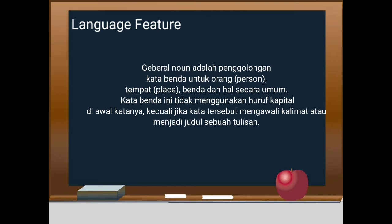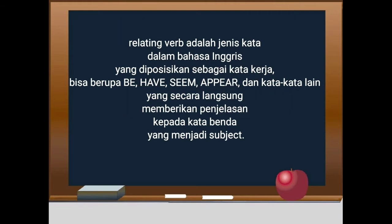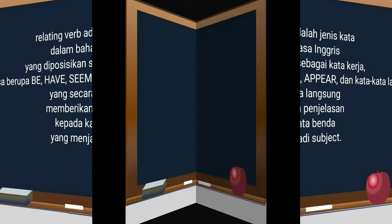Yang pertama menggunakan general noun. What is general noun? Nah, penggolongan kata benda untuk orang atau tempat, benda dan hal secara umum. Contoh tadi kangaroo. Unsur kebahasaan berikutnya adalah relating verb, yaitu jenis kata dalam bahasa Inggris yang difungsikan sebagai kata kerja. Contoh di dalam teks tadi penggunaan kata is dan are.